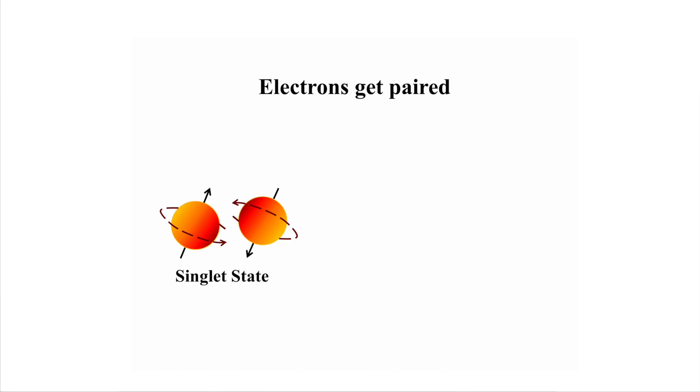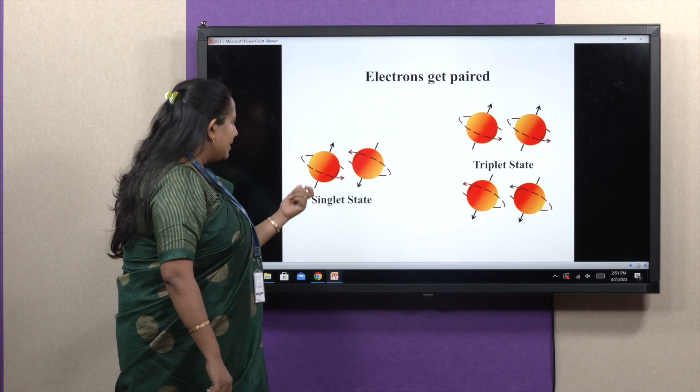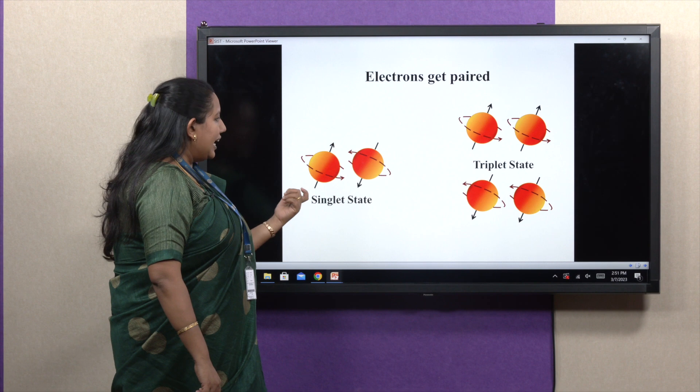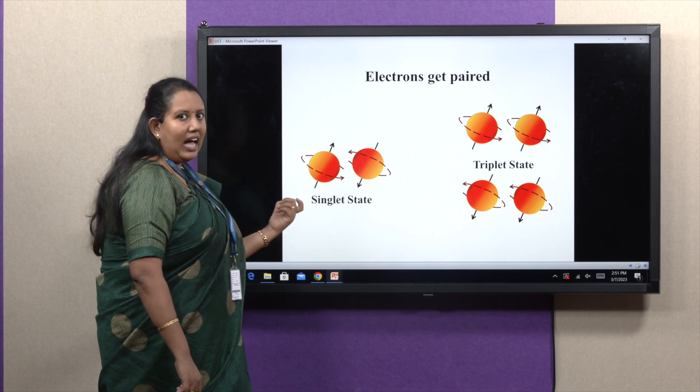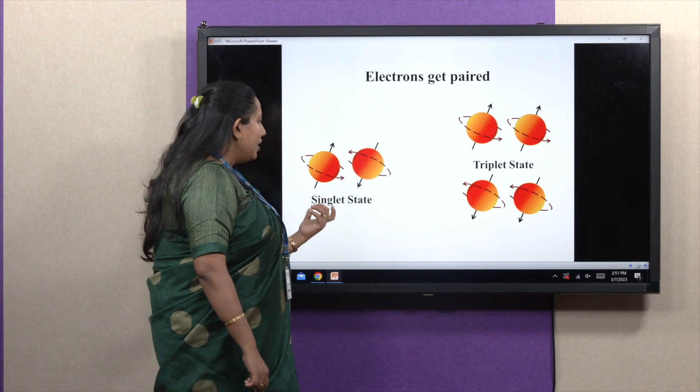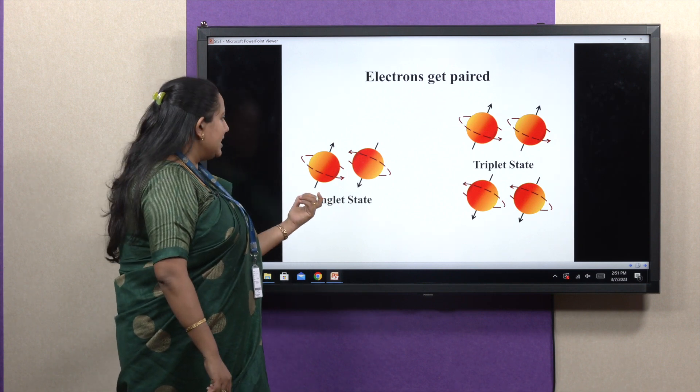Whereas, when similar spins pair up, they create triplet state. Why so? Because when opposite spins are pairing up, their values are plus half and minus half, so net spin will be 0. And we know that for spin multiplicity calculation, we use the formula 2S plus 1. If S is 0, spin multiplicity for singlet state will be 1.